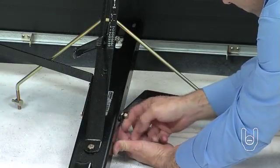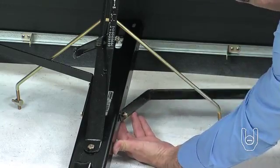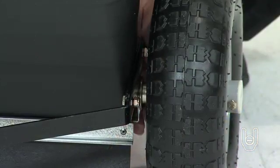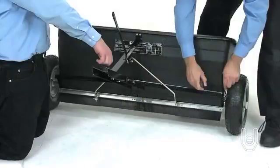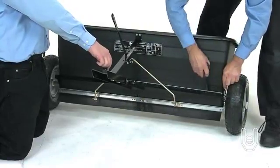With the first tongue brace in position, repeat these steps and attach the second tongue brace to the other side of the hopper. When all the parts are in place, tighten all the bolts.